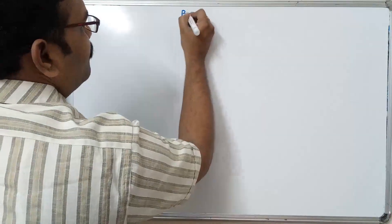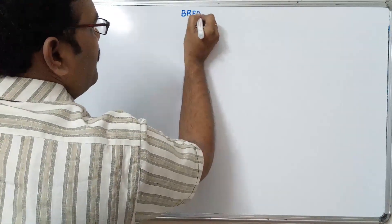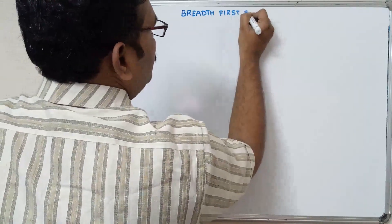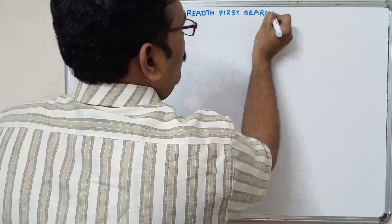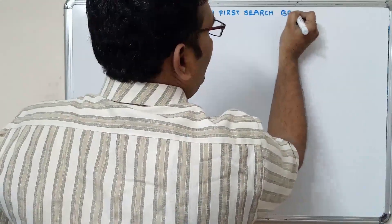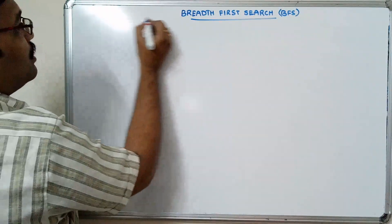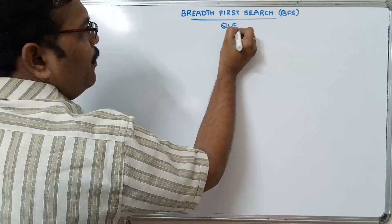Hello friends, welcome back to our channel. In the previous session we saw one graph traversal technique — depth first search. In today's session we'll go with another graph traversal technique: breadth first search, or BFS. In order to implement BFS we use the queue data structure, which is a first-in first-out queue.